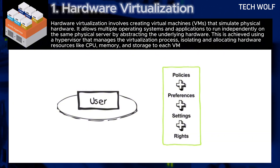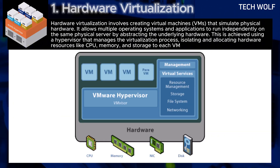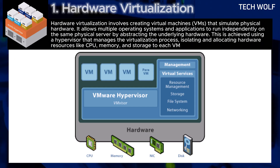The first is hardware virtualization. Hardware virtualization involves creating virtual machines, or VMs, that simulate physical hardware. It allows multiple operating systems and applications to run independently on the same physical server by abstracting the underlying hardware. This is achieved using a hypervisor that manages the virtualization process, isolating and allocating hardware resources like CPU, memory, and storage to each virtual machine.